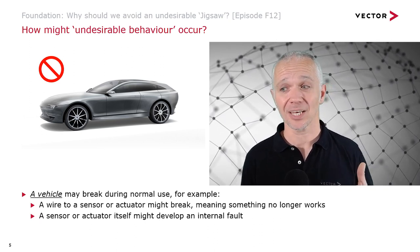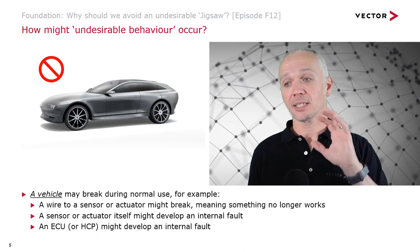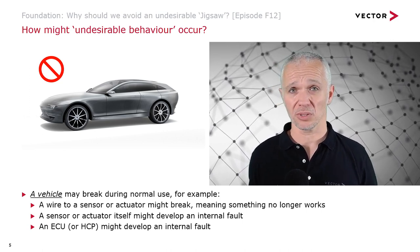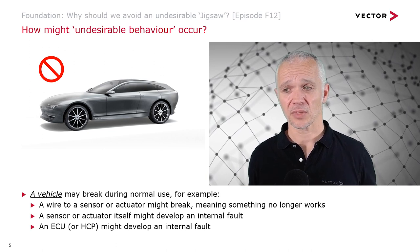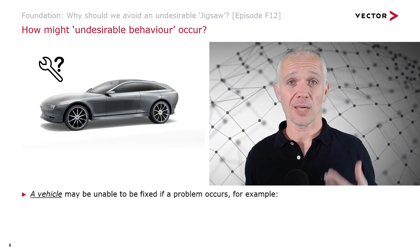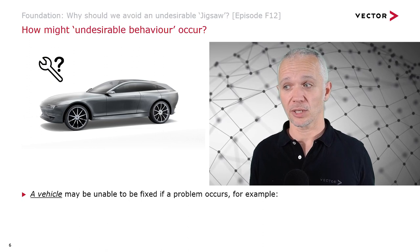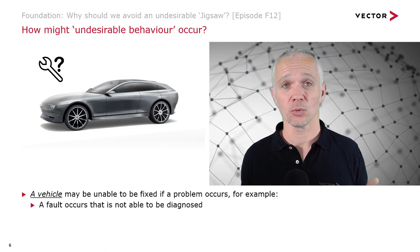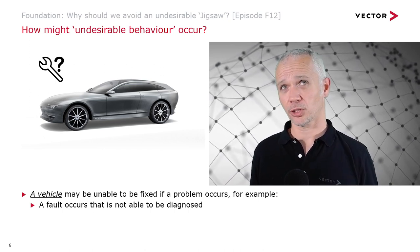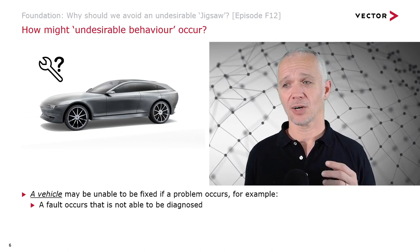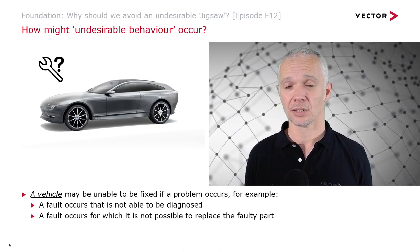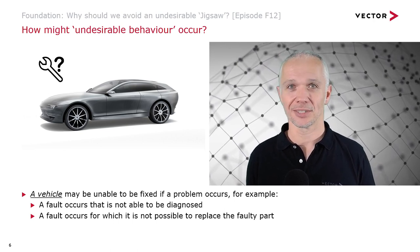A sensor or actuator itself might develop an internal fault, and an ECU or HCP might also develop an internal fault, meaning the vehicle is no longer doing what we want it to do. This brings us to another kind of undesirable behaviour: a vehicle may be unable to be fixed if a problem occurs. If we can't diagnose the fault, we can't fix it. And sometimes we may be able to identify the problem but still not be able to fix it — if whatever is faulty can't be replaced.